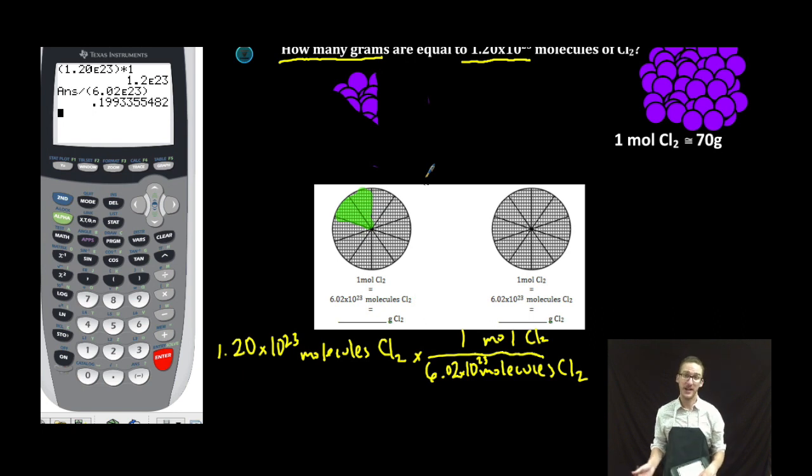And therefore, we're going to have less than a mole. And therefore, we should have less than 70 grams, which is the mass of one mole of chlorine. But let's check it out.